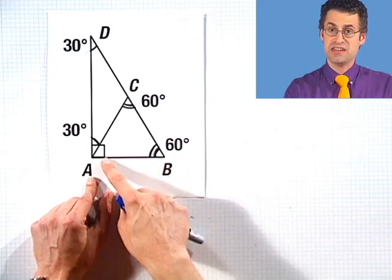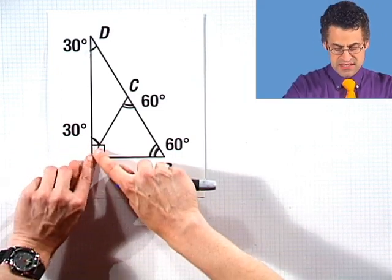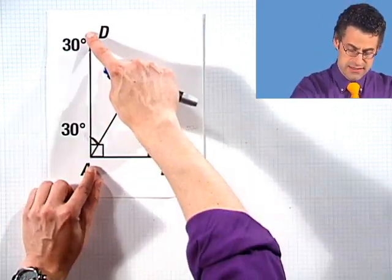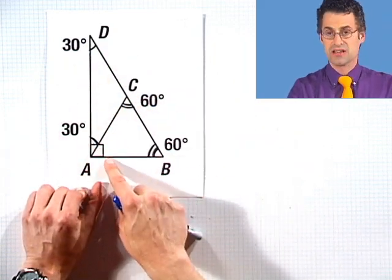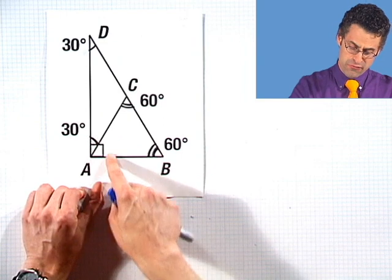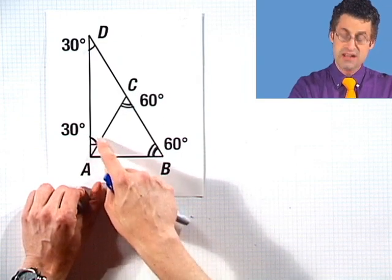We know that this entire angle right here, DAB, is 90 degrees. And we're told that this little sliver of an angle, DAC, is 30. If this entire angle is 90 and this is 30, that forces this angle right here to be 60.